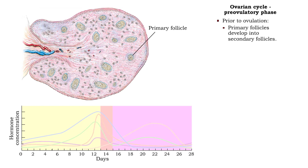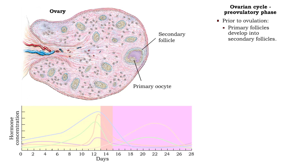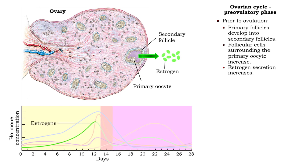Prior to ovulation, primary follicles develop into secondary follicles. The number of follicular cells surrounding the primary oocyte increases. Estrogen secretions increase as well.